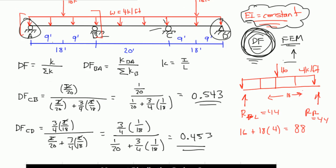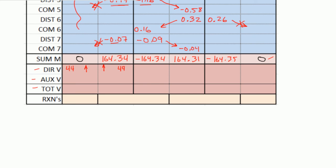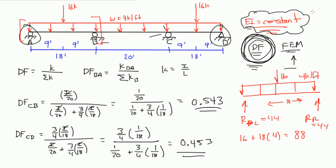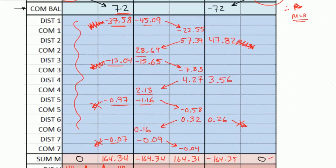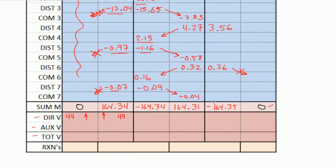For span BC, which is this span right here, you have 4 kips per foot going down over 20 feet, so that's 4 times 20 is 80, so you have 80 going down. That means B and C are going to be 40 going up, right? It's just a simply supported beam — that's what direct shear is. So here I'm going to write 40 and here I'm going to write 40, and both of these are going up.